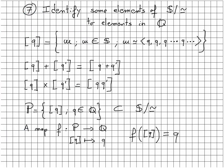Finally, step 7. We can identify some particular elements of the partition, to elements of Q. Let me define here q between square brackets as the equivalent class of all the omegas, which are Cauchy sequences, which are equivalent to the constant sequence q, q, q, q, where q here is a rational number. Of course, the product and the sum of two constant sequences are constant sequences. I can now define the set P of all those particular sequences. And we should note that this is a subset of the set of partitions.